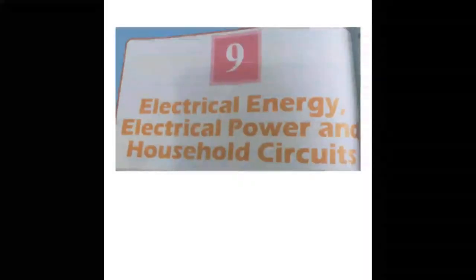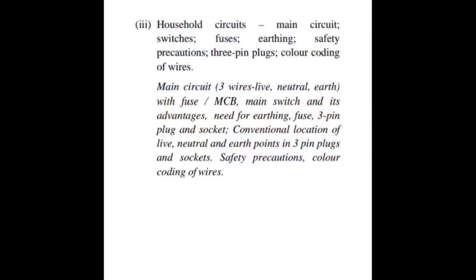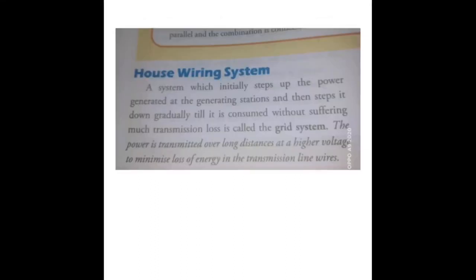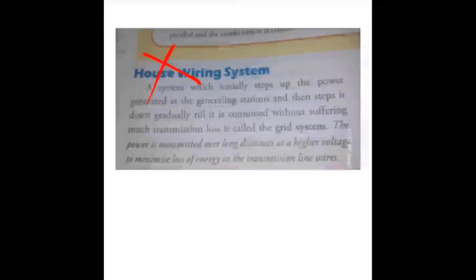As per the new reduced syllabus, some topics have been removed from household circuits. I will tell you which topics have been excluded. For example, house wiring system is excluded from the syllabus. However, I will briefly explain the grid system — it is a system used at power generating stations to step up and step down power until it is consumed by the consumer.